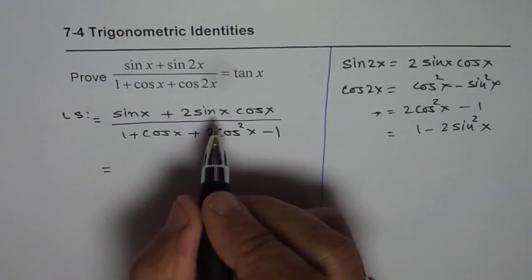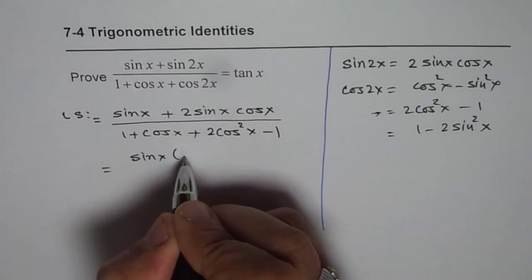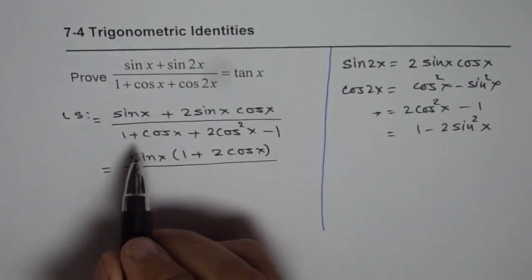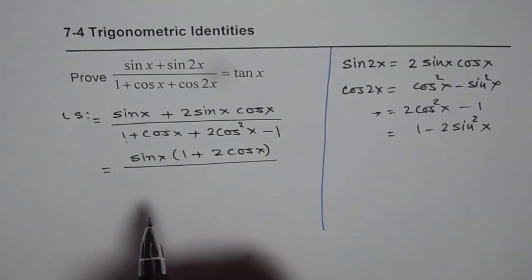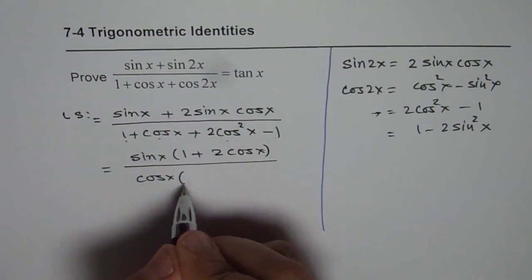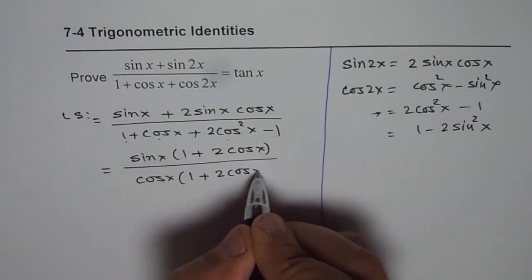So now I can factor sin x in the numerator which is sin x will give me 1 plus 2 cos x. And in the denominator 1 minus 1 is 0. I can factor cos x. So I can get cos x equals to 1 plus 2 cos x.